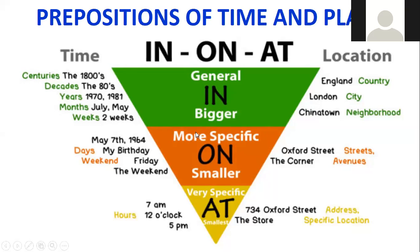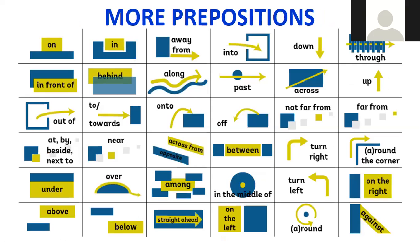What about at? I use at for very specific time or smallest locations. For example, hours. At 7am. At 12 o'clock. At 5pm. And to give exact address. Like 734 Oxford Street. Or the store. That's on the specific location inside the big city. I am at, or let's meet at, the department store. At 734 Oxford Street.